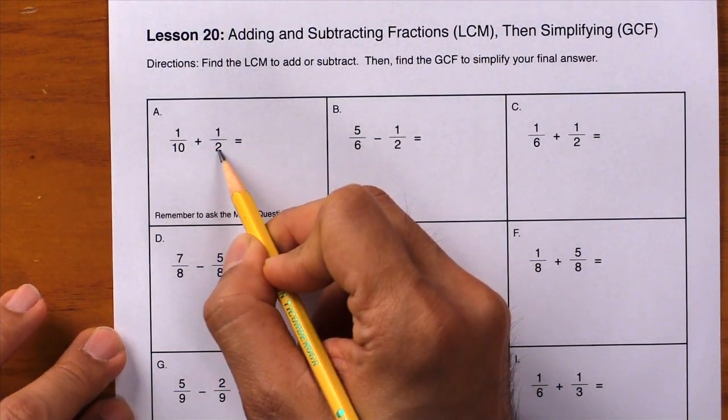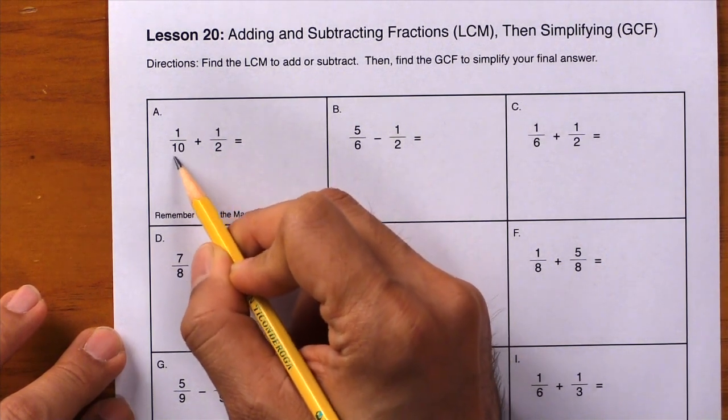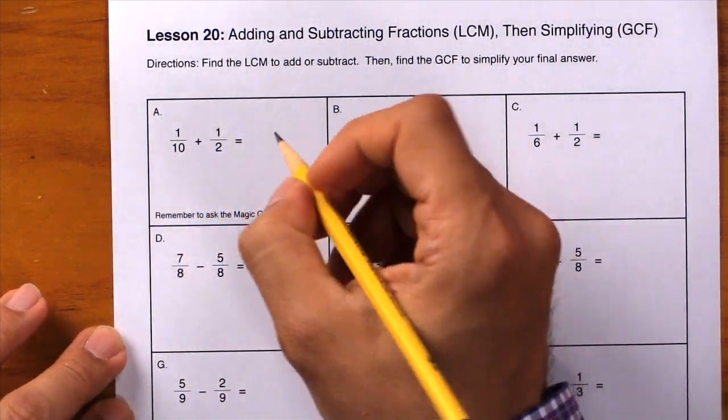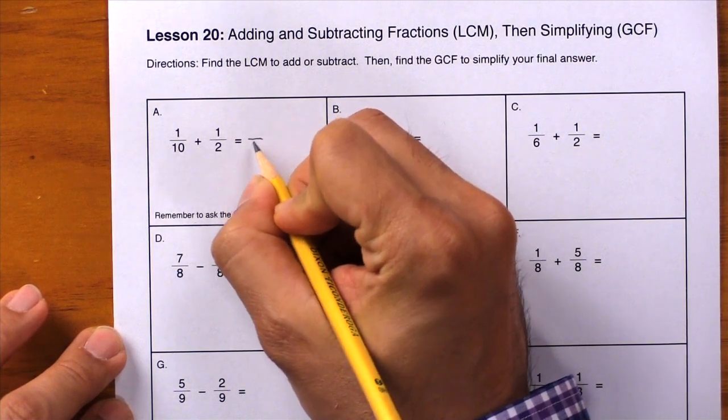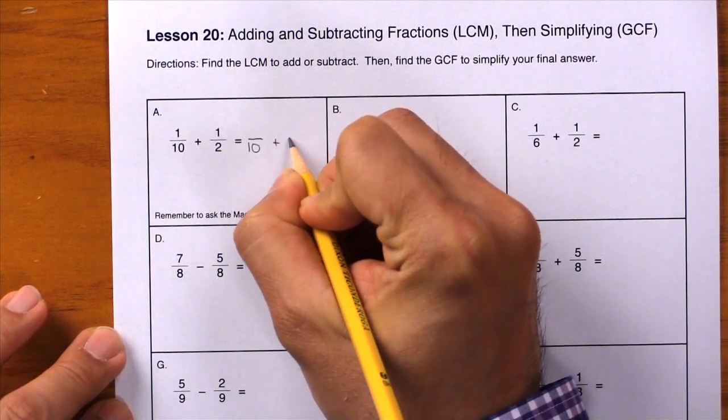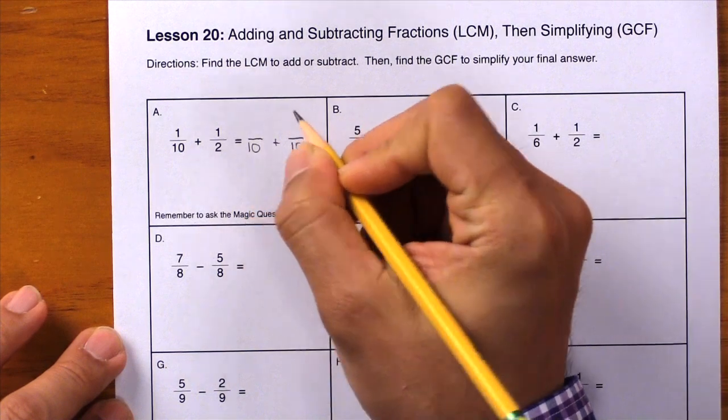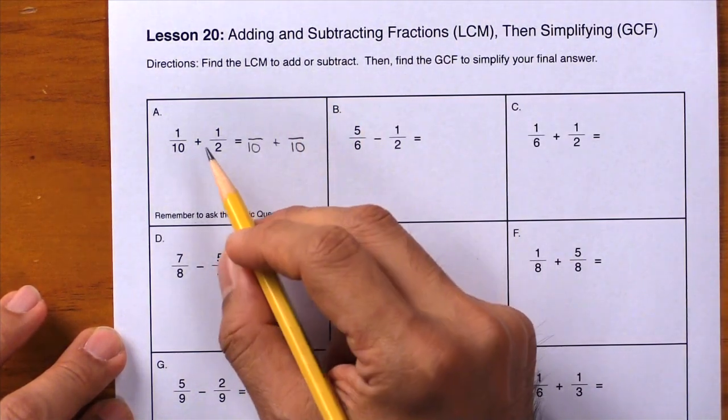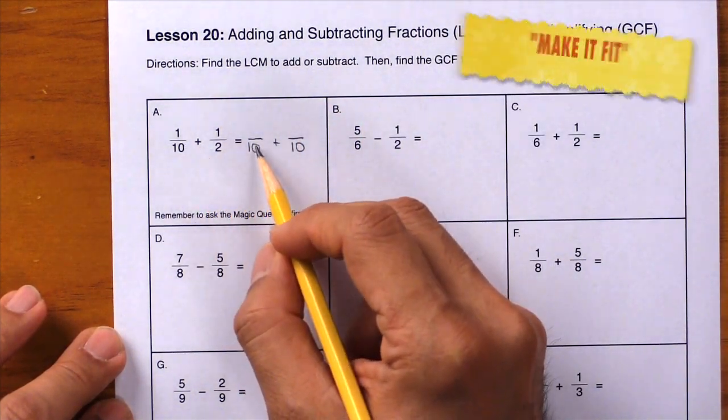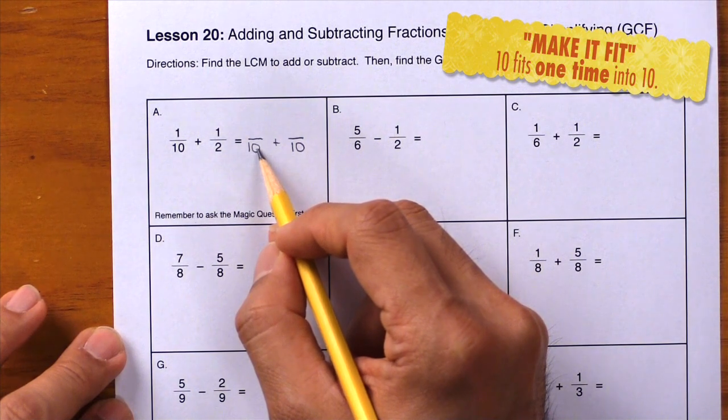Can we do 10 divided by 2 evenly? The answer is yes, so 10 is our LCM right away. Right, blank over 10 plus blank over 10.